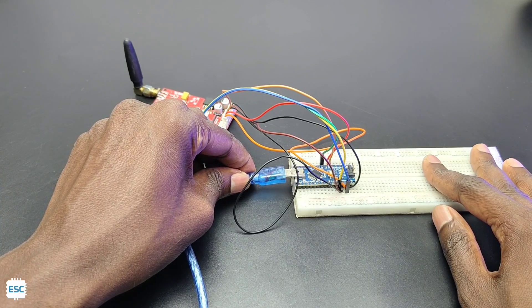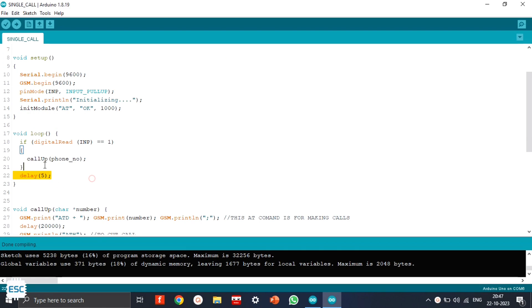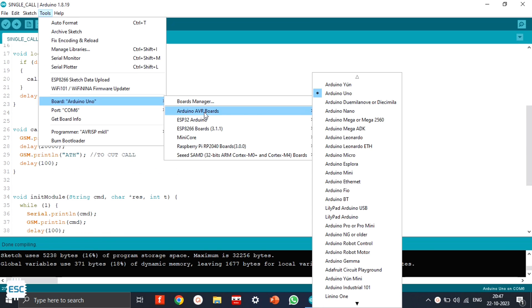Now let's see the code. The SIM900 module works on AT commands, so these are the AT commands for making a call. Arduino reads the output and it will execute the AT commands when the output gets triggered. You can download the code from my site. Now select the board and correct port, then upload.